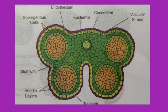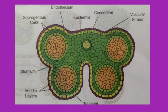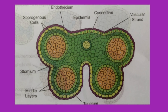The epidermis and endothecium represent the outermost layers of the microsporangium. The most important layer is the innermost layer, called the tapetum. The tapetum is significant because it provides nutrition to the developing microspores or pollen grains. There is another layer present between the tapetum and the endothecium called the middle layer. The connective, which contains a vascular strand, connects the anther to the filament and is the sterile part of the stamen.